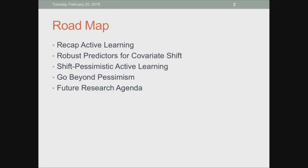This is the roadmap. According to the title, we are going to talk about active learning. We'll first recap some of the basics. Then we'll talk about robust predictors for covariate shift and how this can be used to help active learning — that's our shift pessimistic active learning method. After that, we'll talk about how we can go beyond that pessimism, and finally we'll come to my future research agenda.